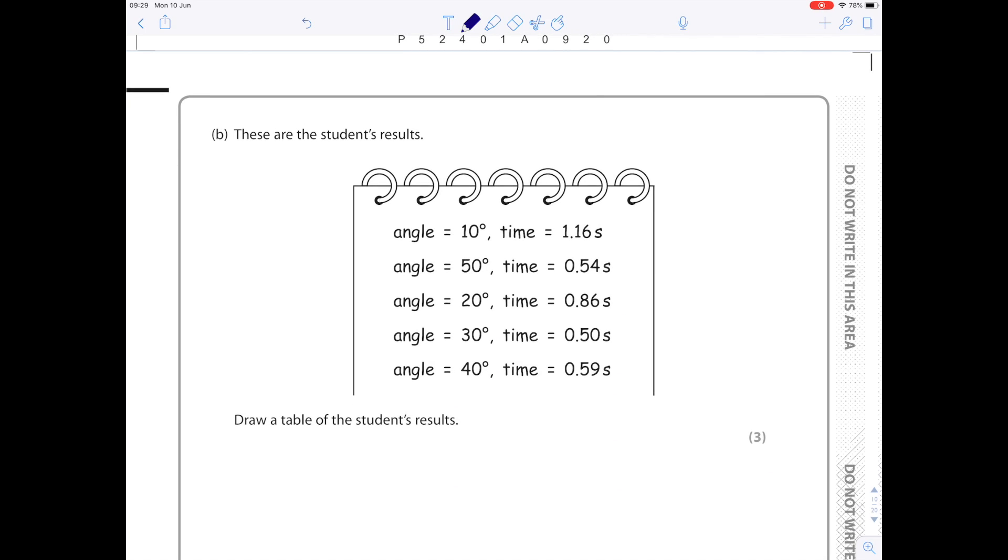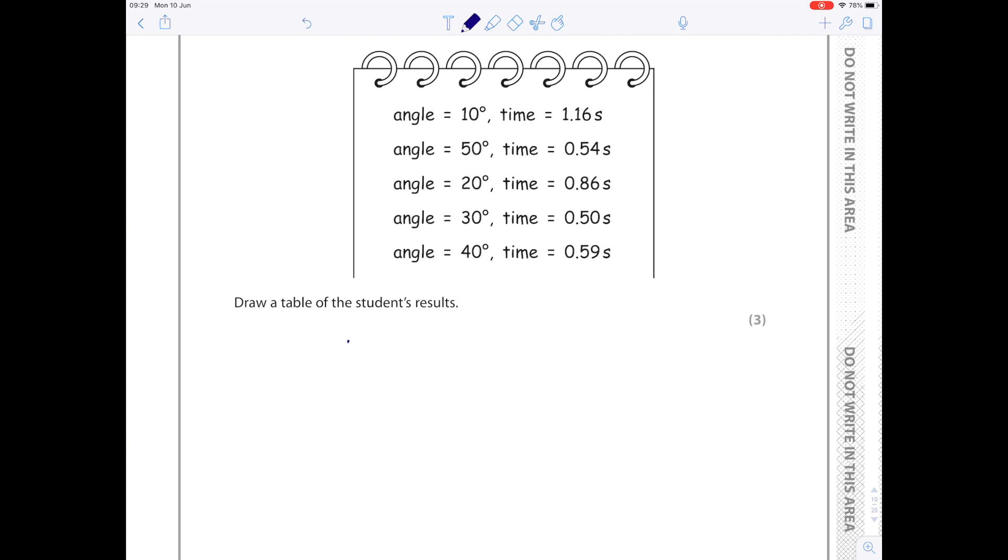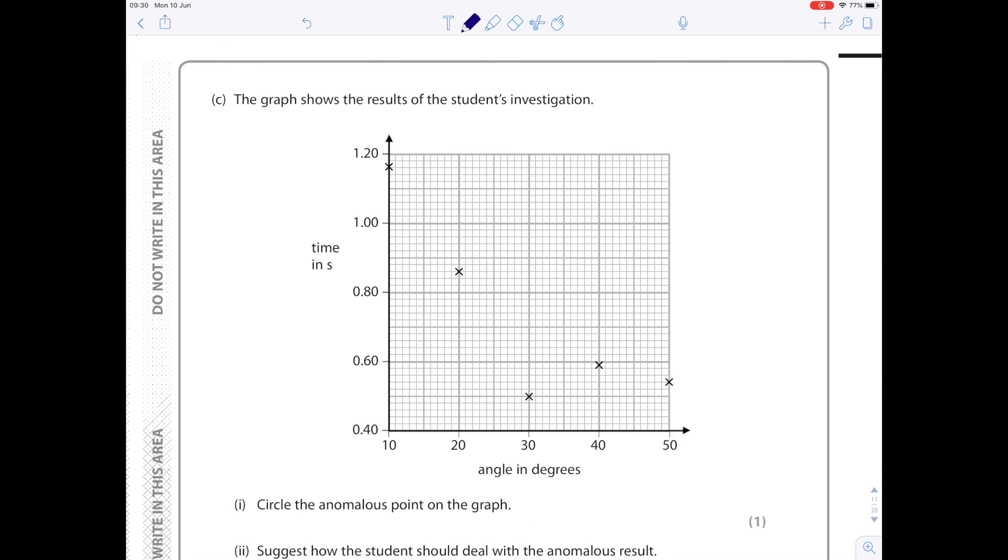These are the student's results. Draw a table of the student's results. First of all, we're going to state the angle on the left-hand side of the column, and remember we need that in degrees. Then on the right-hand column you have what you're measuring, the dependent variable, the time in seconds. Don't forget your units. Starting with the lowest angle, which was 10 degrees, going up in order: 20, 30, 40, 50. At 10 degrees, the time was 1.16 seconds. 20 degrees it was 0.86. At 30 degrees it was 0.50. 40 degrees it was 0.59. At 50 degrees it was 0.54.